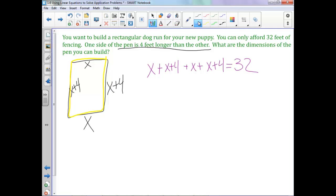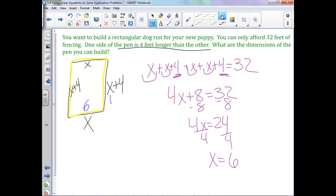So let's clean up this left side. When we combine all of our X's, we've got 4X. When we combine our 4's, plus 8, subtract our 8, 4X equals 24, divide both sides by 4, and X equals 6. But we want the dimensions of the whole pen. So that means this is 6 and this is 10. So the dimensions are 6 feet by 10 feet.